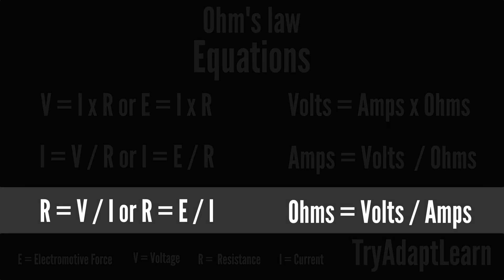The letter R in the equations represents resistance. Resistance is the measurement of restriction or resistance to the flow of electric current. When solving these equations the value for R will be in ohms.